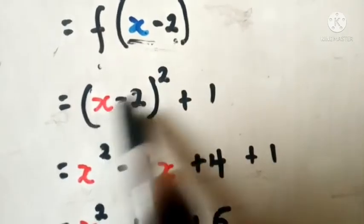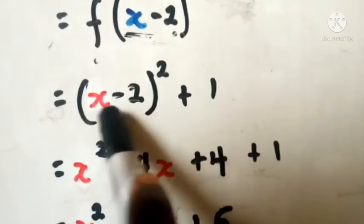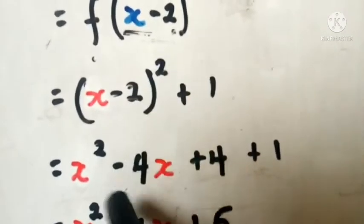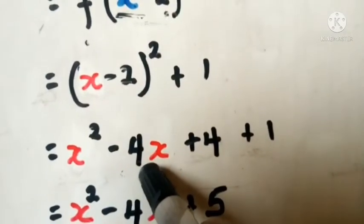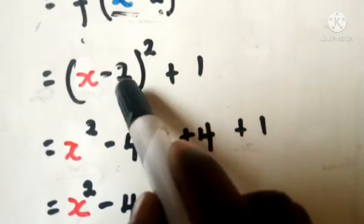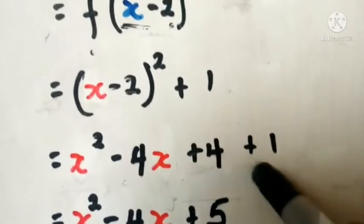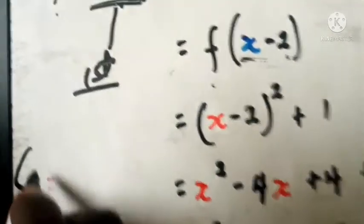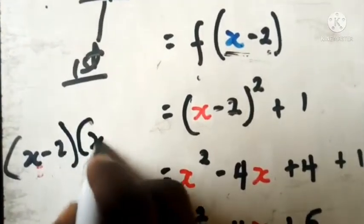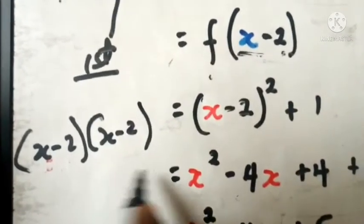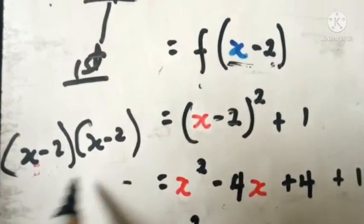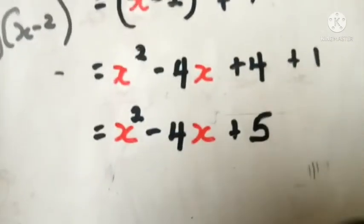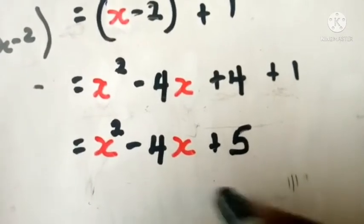When you expand using the exponent rule, you have x squared, then 2 times x times minus 2 gives minus 4x, and then minus 2 squared gives positive 4, and then plus 1. So after combining, you arrive at x squared minus 4x plus 5. If you can't expand using the shortcut, you can just do it the traditional way: write out (x minus 2)(x minus 2) and multiply. Either way, the final answer is x squared minus 4x plus 5.